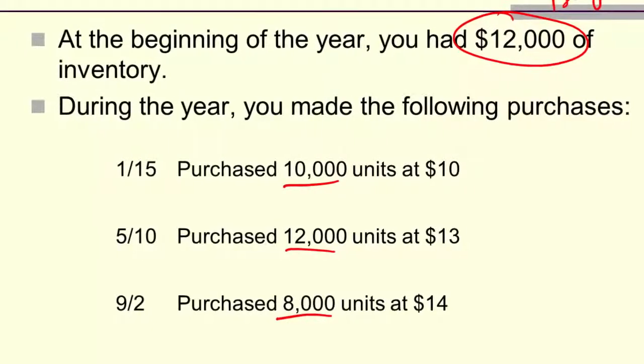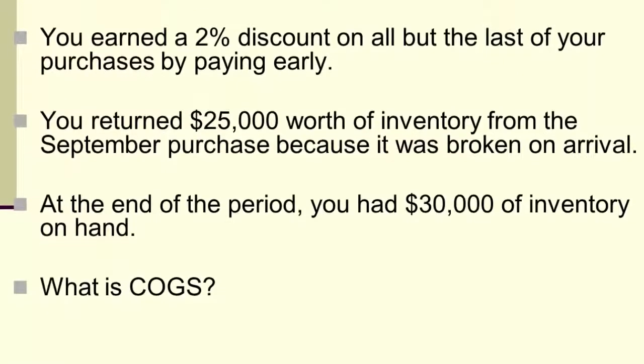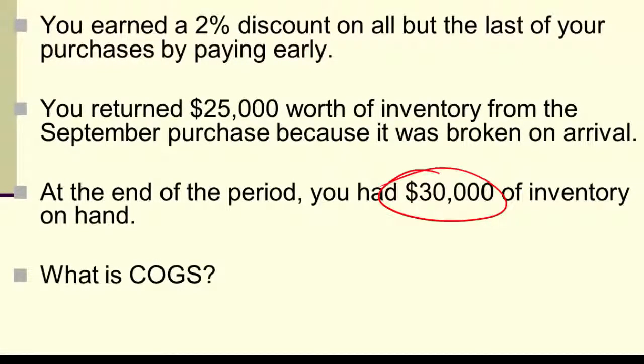In addition, you end up paying 5% of the purchase price in shipping costs. Apparently your vendor doesn't pay for the shipping to you. You need to find a new vendor, by the way. You get a discount. If you pay early this vendor gives you some money back or doesn't charge you as much. And we need to record the fact that you got this discount. On that last purchase you didn't get the discount, you didn't pay within the window that your vendor provides, but you did end up finding some faulty units and you sent them back. So $25,000 got shipped back without you having to pay for it. Then at the end of the year you went through and you did inventory. And you found $30,000 in your warehouse. So that's your ending inventory number.